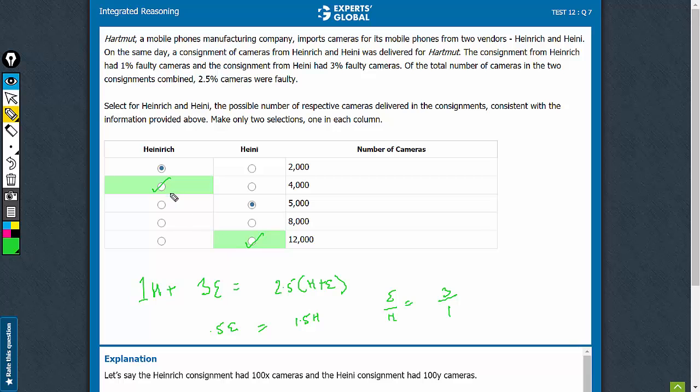Again, be very clear about the order because it's Heinrich first and then Heini. This order is very important. Heinrich here is the smaller one, so it's 4 to 12, not 12 to 4.